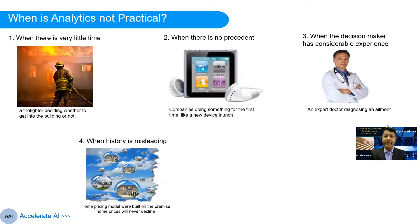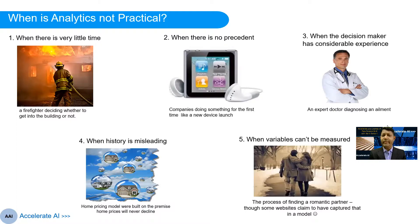Another area where analytics can be misleading is when the historical data itself is misleading. One example is the home pricing models built in the US before 2008, which were built on the premise that home prices would never decline — leading to the 2008 housing bubble. A fifth case where analytics is not practical is when you cannot measure the variables that impact your final outcome. Finding a romantic partner is one example — it's very hard to quantify what clicks, and even psychometric tests have limited success here.